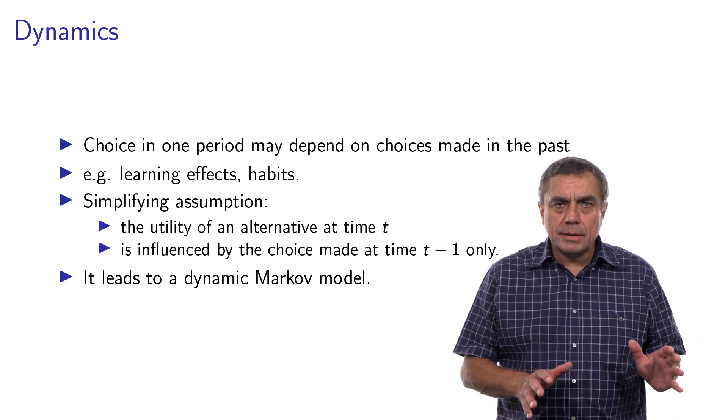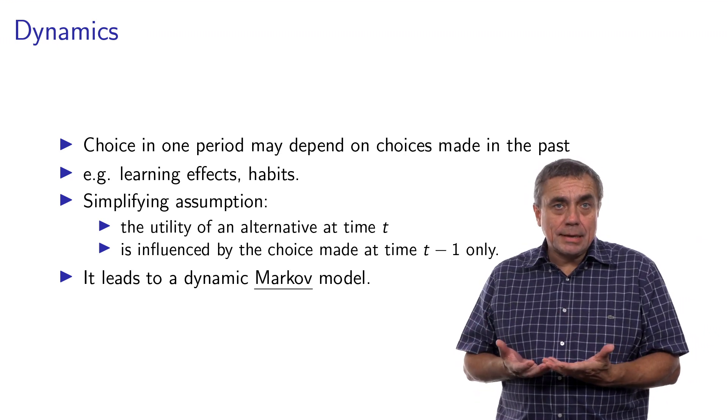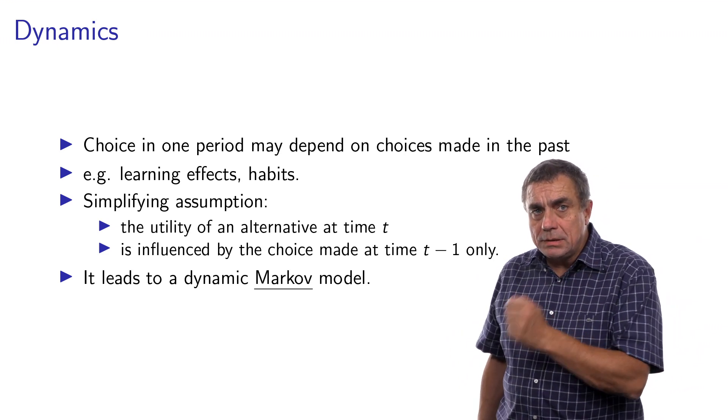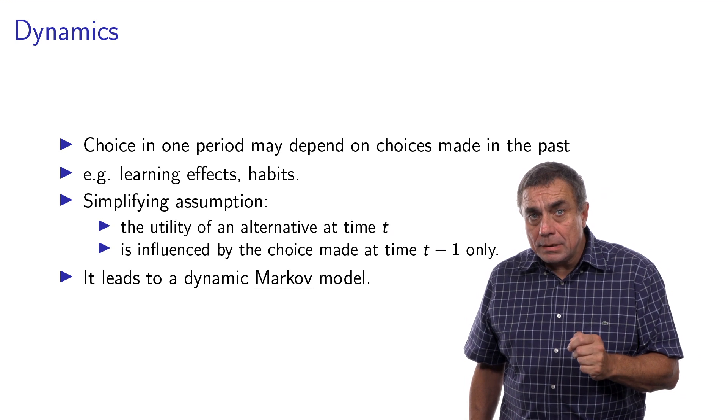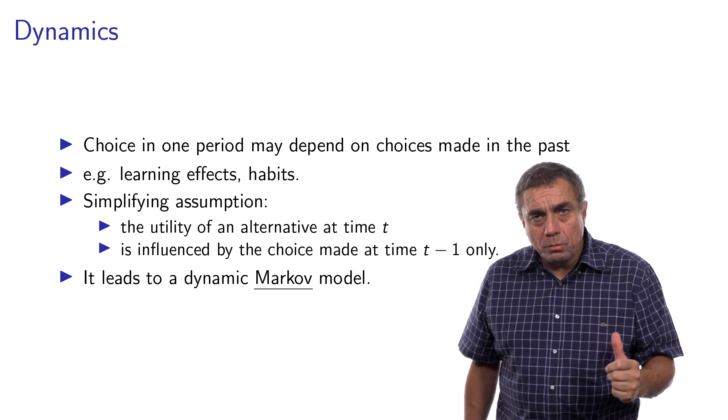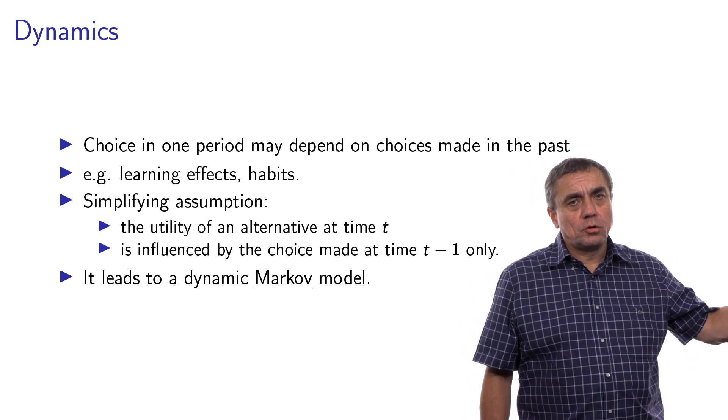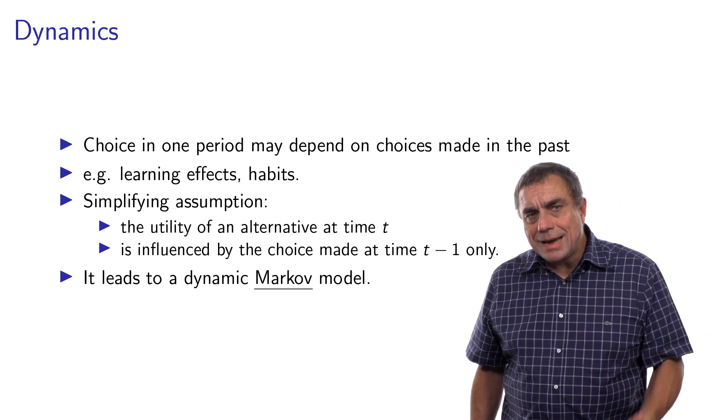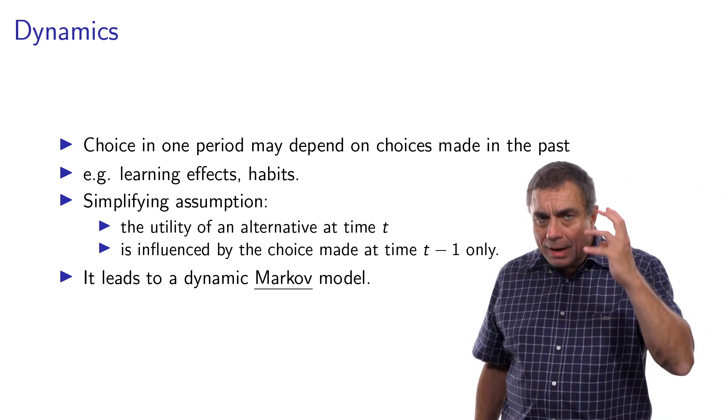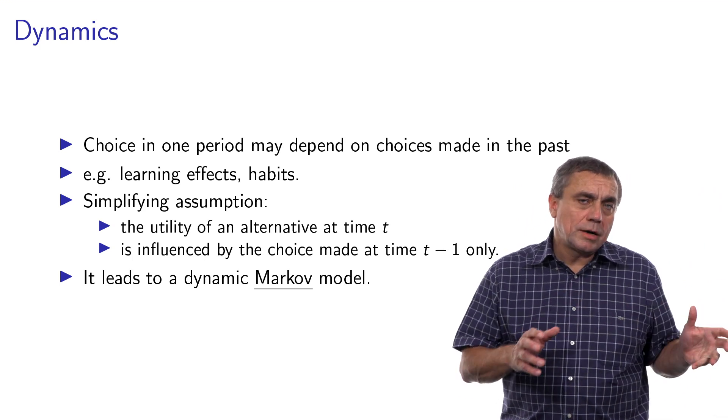We will make a simplifying assumption called a Markov assumption. It states that the utility of an alternative at time t is influenced by the choice made at time t minus one only. We go back one time interval in the past instead of considering explicitly the whole history. This leads to a model called a dynamic Markov model, where Markov means we look only at the previous time interval when we specify the model.